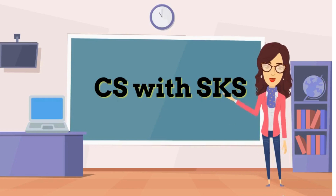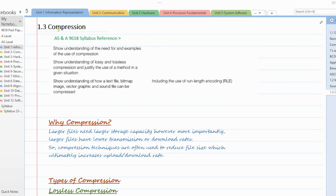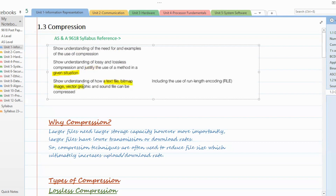Hello everyone, welcome to my channel. Let's learn computer science. In today's session we are going to learn about compression. The syllabus reference requires understanding of the need for compression and examples of its use, understanding of lossy and lossless compression, and how to justify the use of a method in a given situation. Also, understanding of how a text file, bitmap image, vector graphic, and song file can be compressed, including use of run length encoding. That's part of your syllabus as unit 1, AS 1.3.